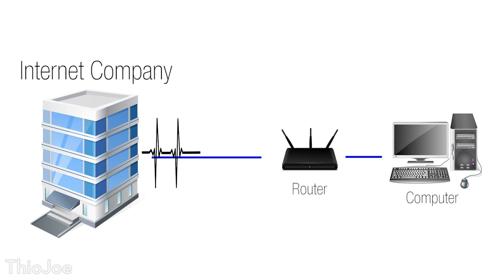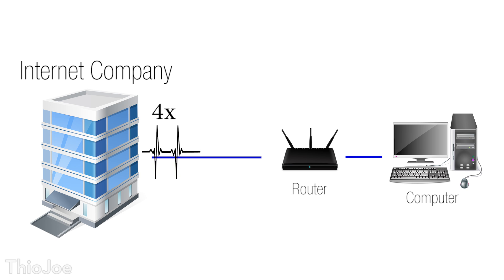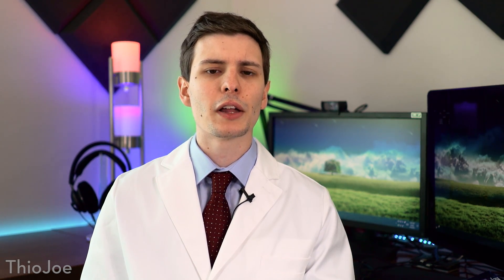So in using a stronger internet connection signal, by the time it arrives at your computer, you'll have the 100 megabits you paid for. And when the ISP sends out the signal, they typically use about 4 times the desired final speed, because on average the signal degrades by about 75%. Sometimes the signal may even degrade more, which is often the reason your internet speed may drop below what you're supposed to get on occasion.